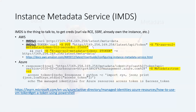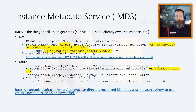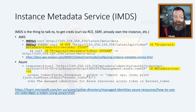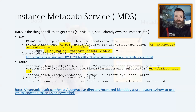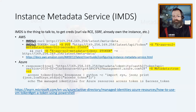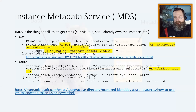Instance Metadata Service, or IMDS as you'll commonly hear it called — IMDS is the thing to talk to in order to get creds and do other stuff. We won't go into great detail on IMDS, but it's something you want to be aware of as you're testing. Two common ways to access the IMDS during app testing: one, if you have RCE on the system, you could just use curl to access that service and get your access key. If you're not that lucky, you're more likely to see SSRF in an app. If you do have an SSRF, that's another way you could potentially get an access key — in particular an AWS access key.